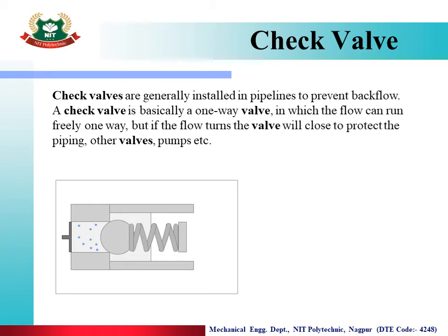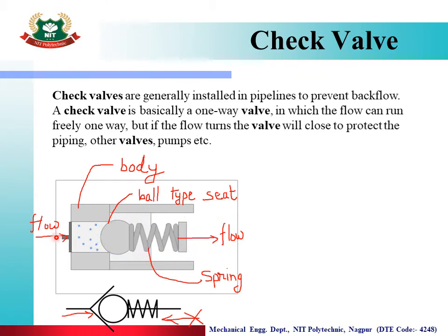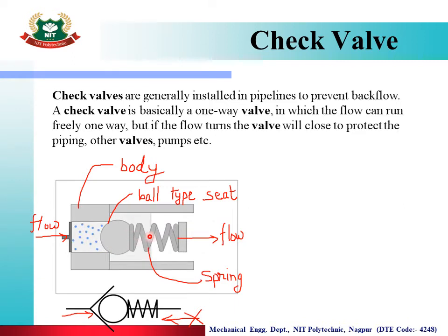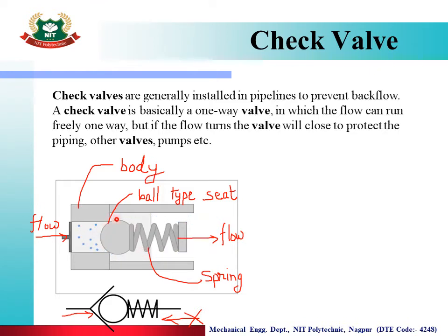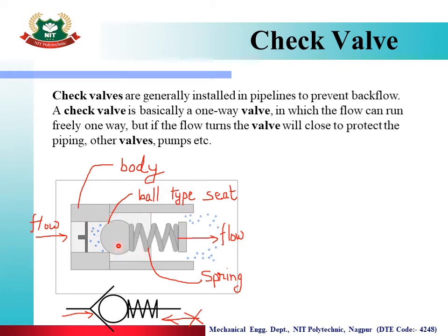In this animation, this is the body of the check valve — the outer body. Fluid flow is coming from here. The fluid flow displaces this ball from its seat, the spring gets compressed, and a passage area opens up. This is the valve seat type. Here is the passage area where flow is allowed, but flow in the opposite direction does not come because the valve closes.